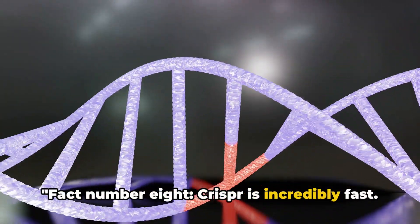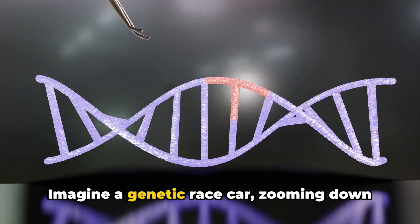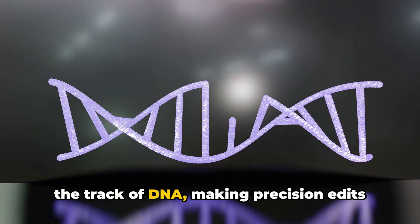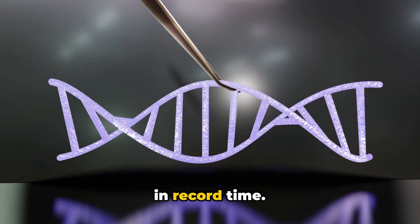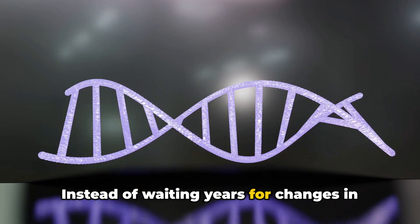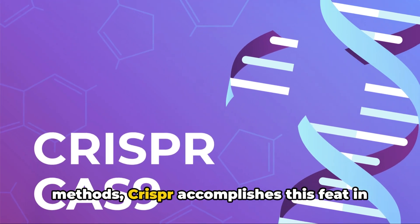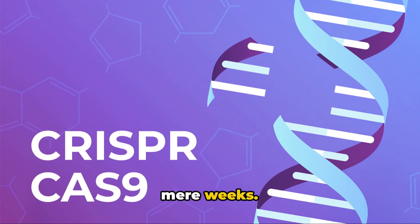Fact number 8. CRISPR is incredibly fast. Imagine a genetic race car, zooming down the track of DNA, making precision edits in record time. Instead of waiting years for changes in genetic codes as with traditional methods, CRISPR accomplishes this feat in mere weeks.